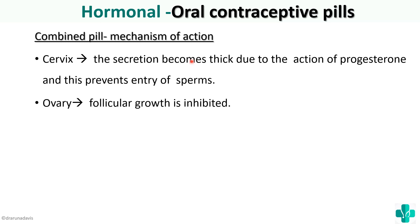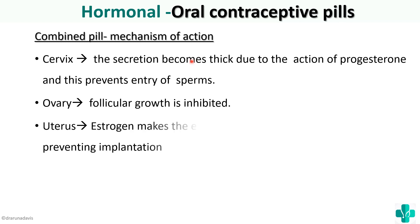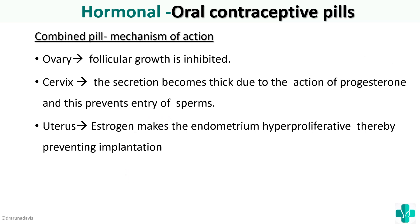In the ovary, follicular growth is inhibited so there is no ovum. And even if there is an ovum and a sperm, implantation will be inhibited because estrogen makes the uterus hyper-proliferative, thus preventing implantation. So the sperm is blocked, the ovum is blocked, and even if fertilization occurs, the endometrial bed is not suitable for implantation.